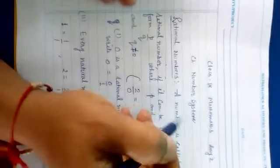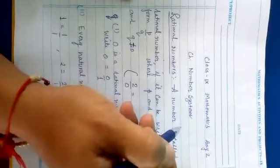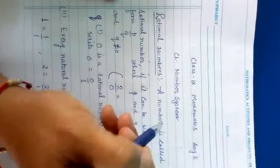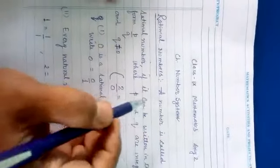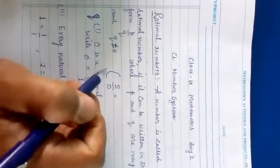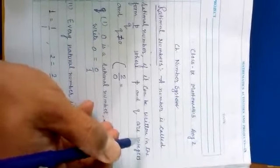9th mathematics day 2, chapter number system. Student, we have studied natural numbers, integers, whole numbers, etc. Right now, rational number. A number is called a rational number if it can be written in the form of p upon q where p and q are integers.